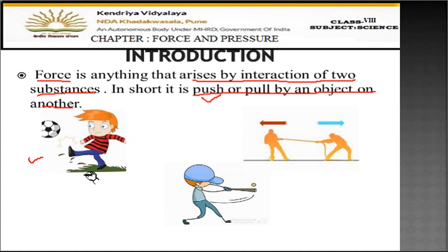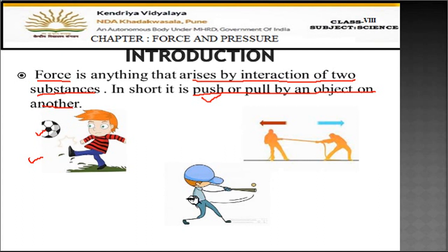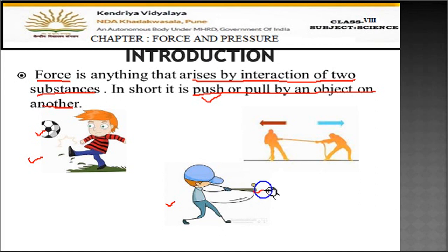For example, here a boy has kicked a ball up in the air. The two objects are: the boy who is applying the push on the ball, and the ball on which the force is applied — it is an interaction between two substances. In another diagram, a boy is playing with a ball using a bat, pushing the ball away from himself. So there is interaction between the bat and the ball.